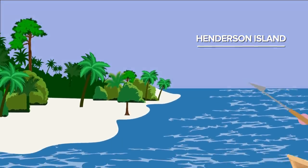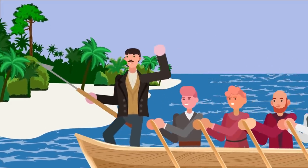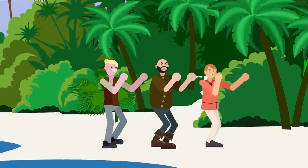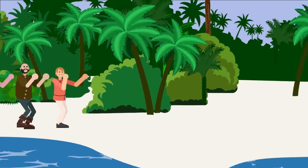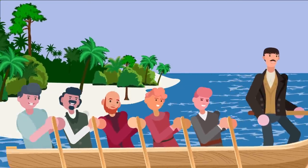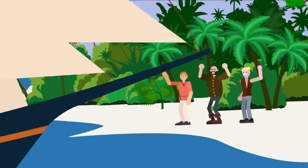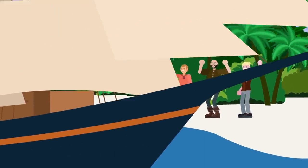You reach Henderson Island two weeks later, but it's barren. Still, three men refuse to get back in the boats, and you leave them behind on the island when you resume your mission, assuming that they're dead men. Ironically, they would be rescued three months later and would end up being the lucky ones.